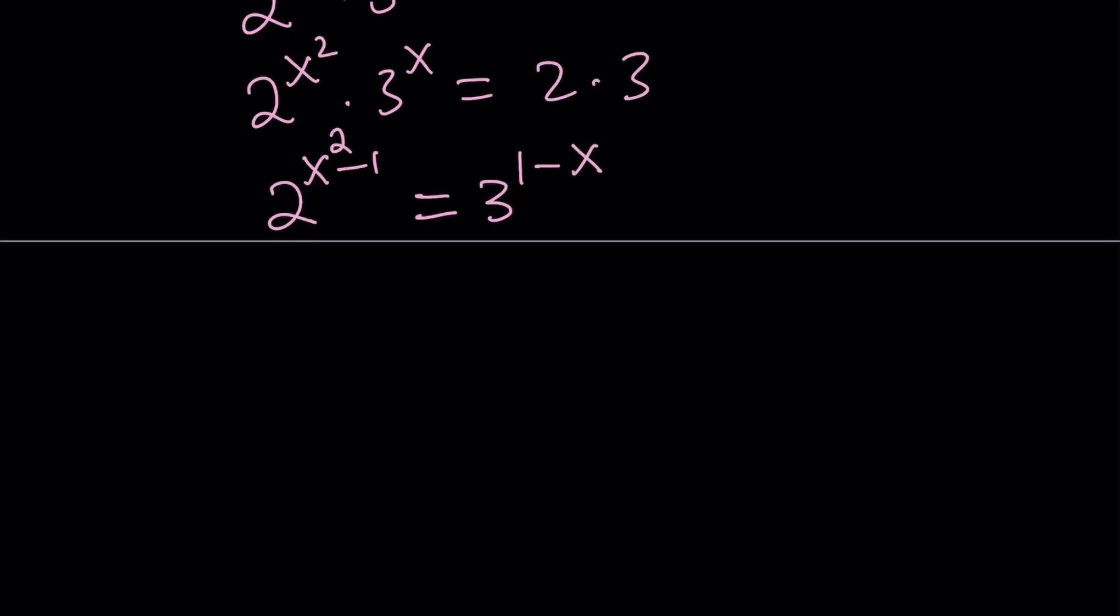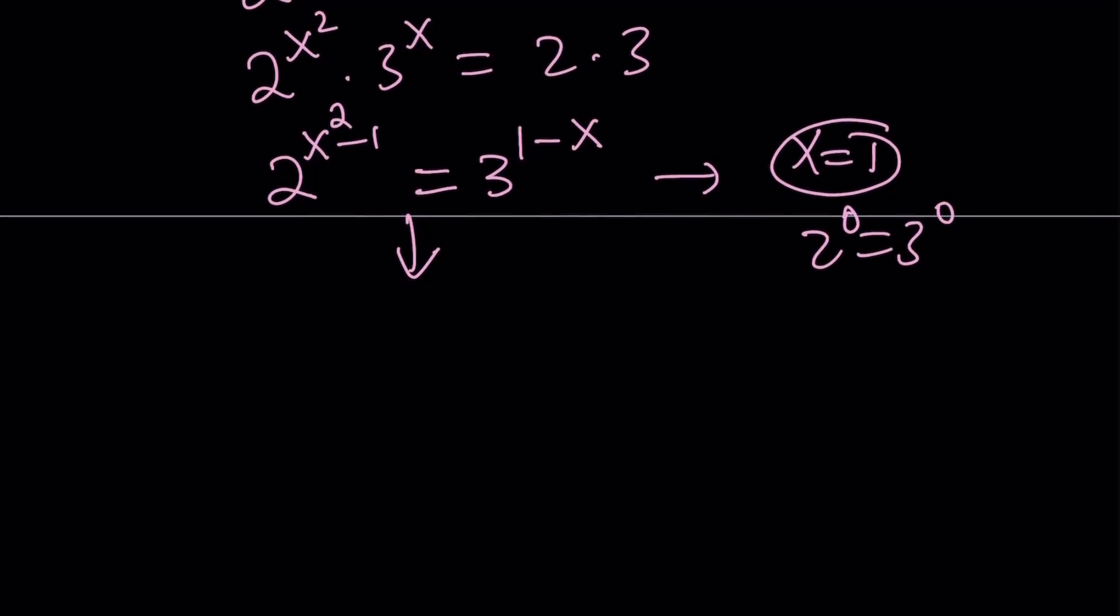Notice that x = 1 is a solution here. You probably saw that, but even if you didn't, x = 1 is clearly a solution because 2^0 = 3^0, obviously. How can I take advantage of that using exponents? I can write this as 2^((x+1)(x-1)) = 3^(-1(x-1)). I just needed to negate 1-x to get x-1.